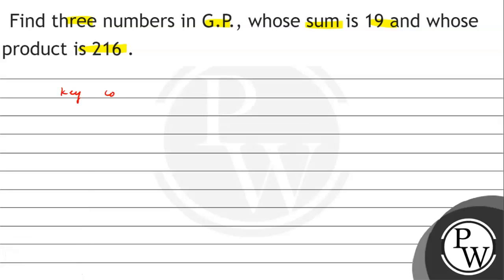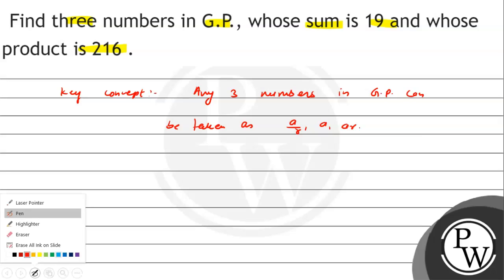The key concept is that any three numbers in GP can be taken as A by R, A, and A R. This is a very important concept.